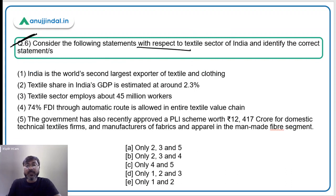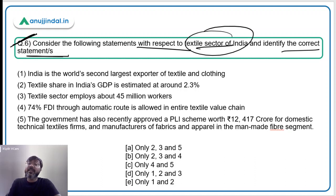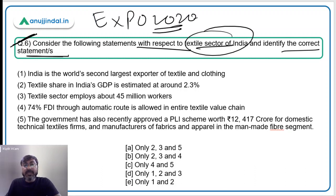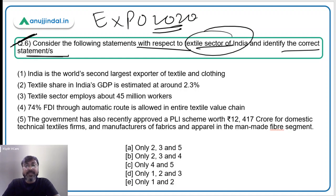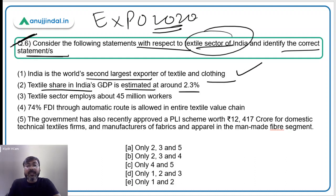Question number 6: you have to consider the following statements with respect to the textile sector of India and identify the correct statement. These facts were shared during Expo 2020 in Dubai. India is the world's second largest exporter of textiles and clothing — correct. Textile share in India's GDP is estimated at around 2.3 percent — correct. The textile sector employs about 45 million workers — also correct.